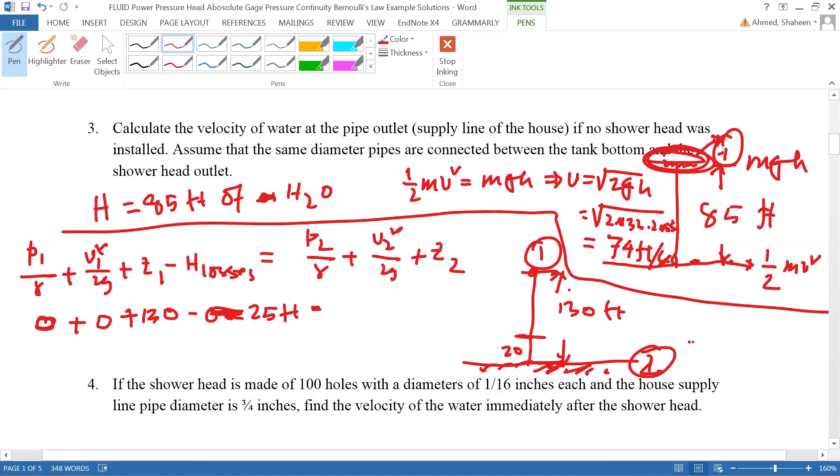And then P2 is also, when it's coming out from the shower head, outside the shower head, basically coming to the atmosphere. So P2 is 0 as well. Plus v squared, v2 squared by 2g, plus z2, your house is, so we want to know pressure at that point. Sorry, that would be g.